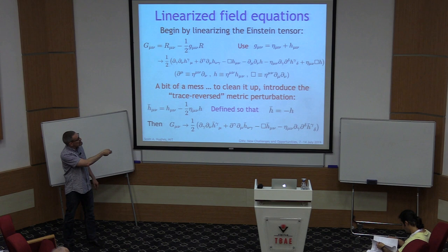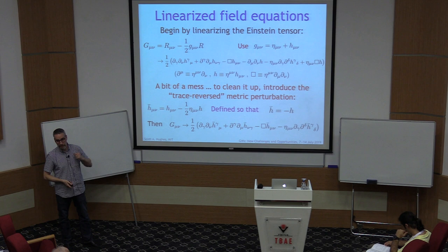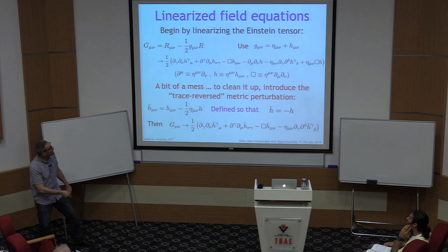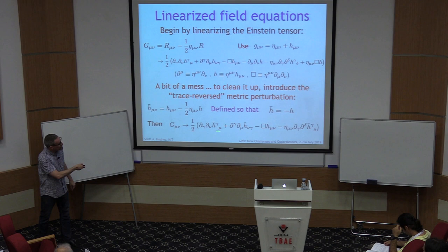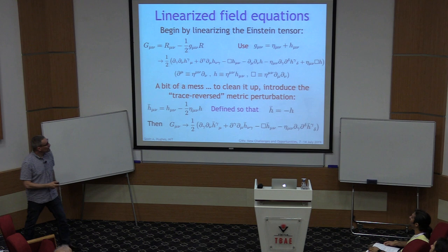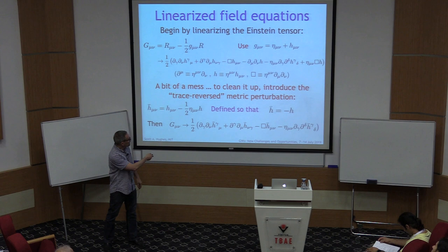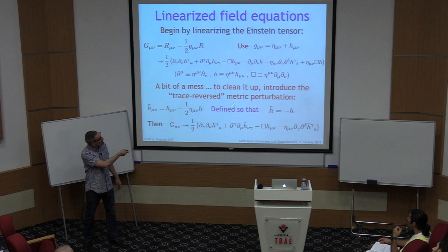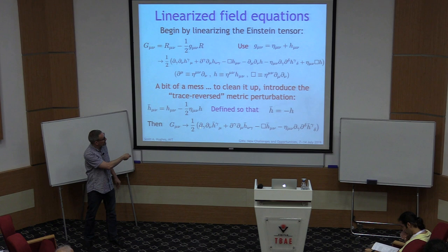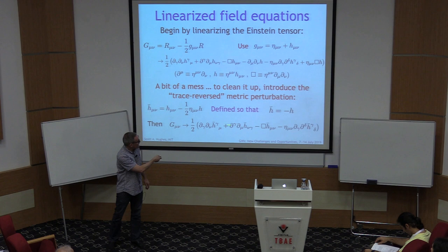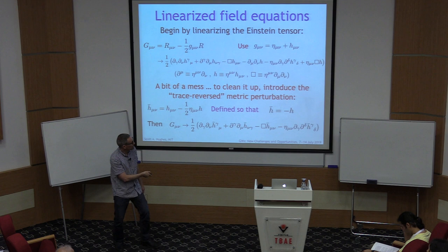The trace of the barred metric is minus the trace of the metric itself. It's nothing more than a notational trick, but if you rewrite using h-bar rather than h, the terms involving the trace go away — it gets rid of two of the six horrible terms. Of the remaining four terms, one is a wave operator and the other three are terms that look like divergences of this tensor — divergences on the gamma index.